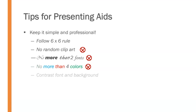You want to contrast the font and the background. A light colored font on a light colored background can be hard to see. Be sure that you have a dark colored font on a light background or vice versa so that it stands out. Avoid animations and transitions — again, they don't add anything. This is not an opportunity to demonstrate that you know where all the bells and whistles in PowerPoint are. Just put the information on the screen and let the audience see it. There's no need to get fancy.